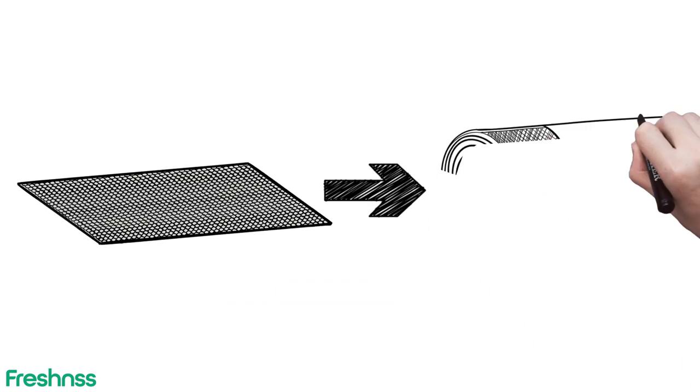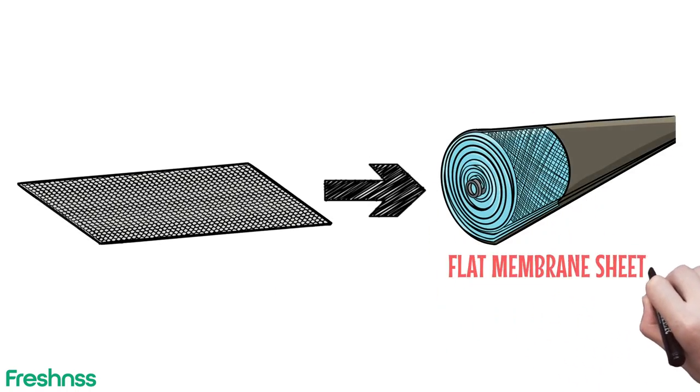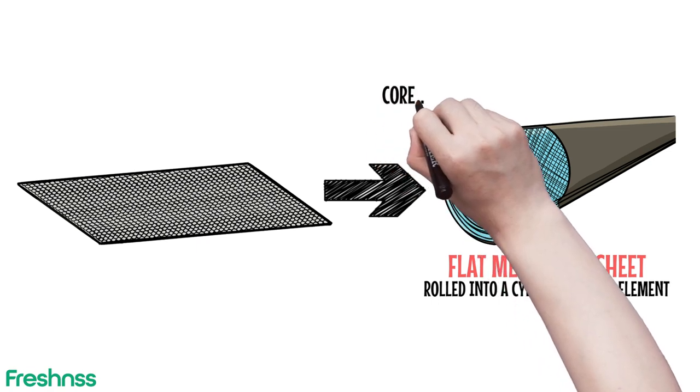A reverse osmosis membrane is constructed from a flat membrane sheet that is rolled into a cylinder-shaped element around the core tube.